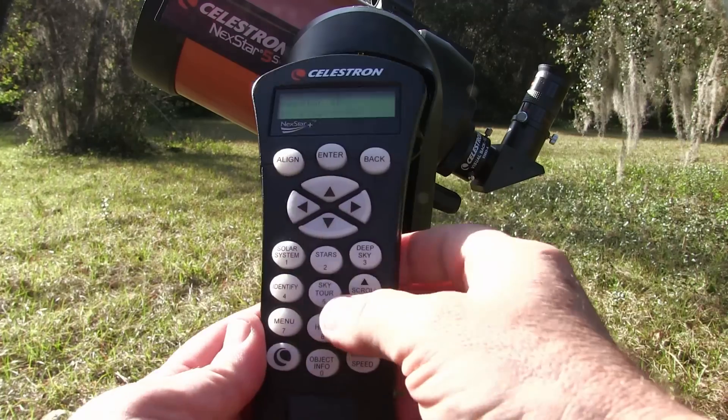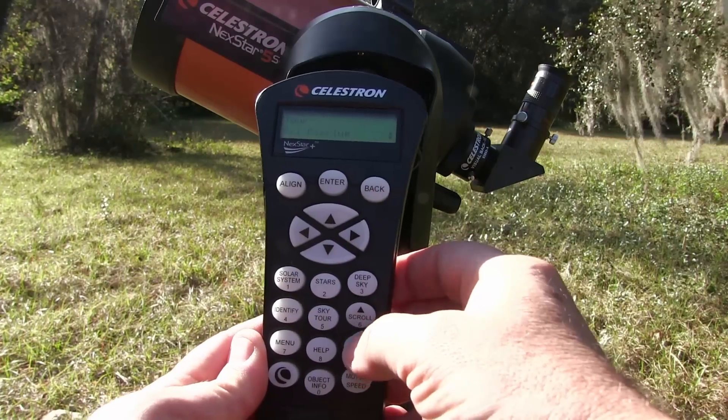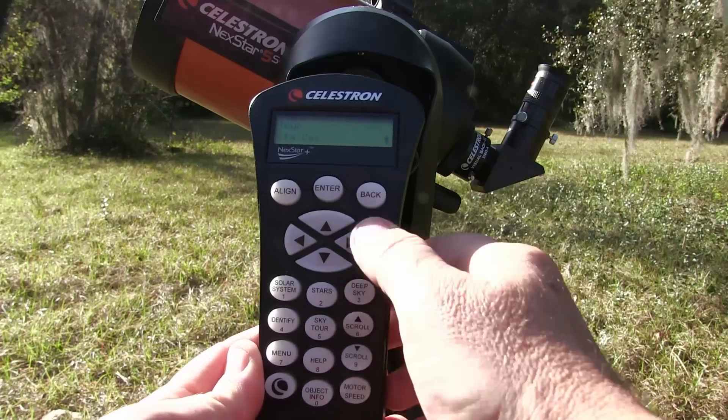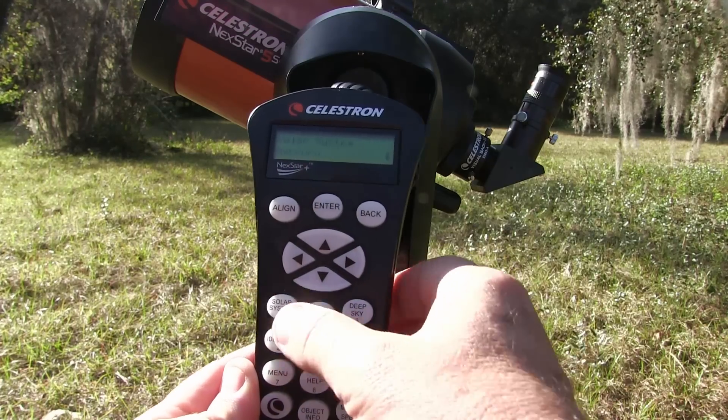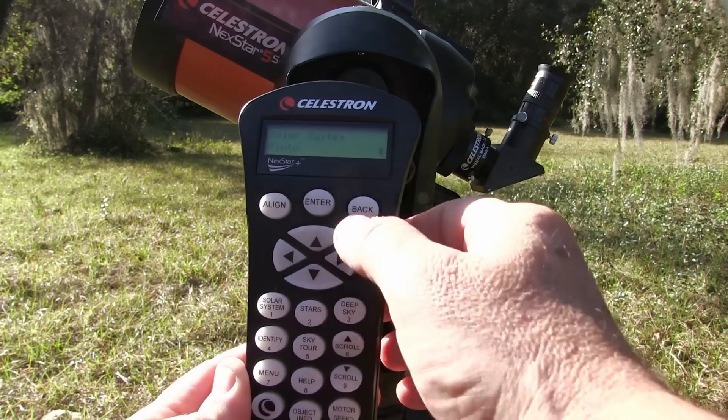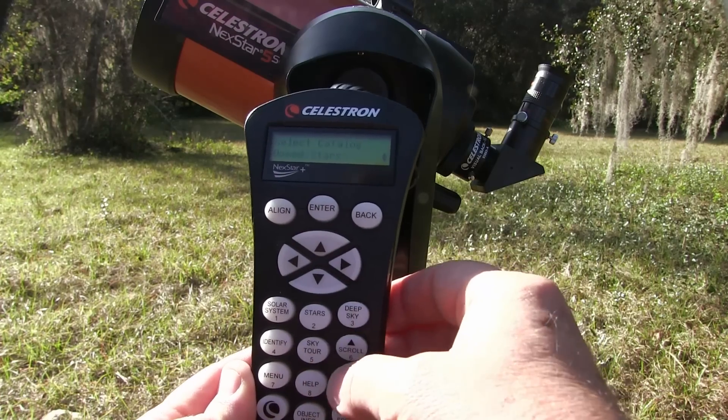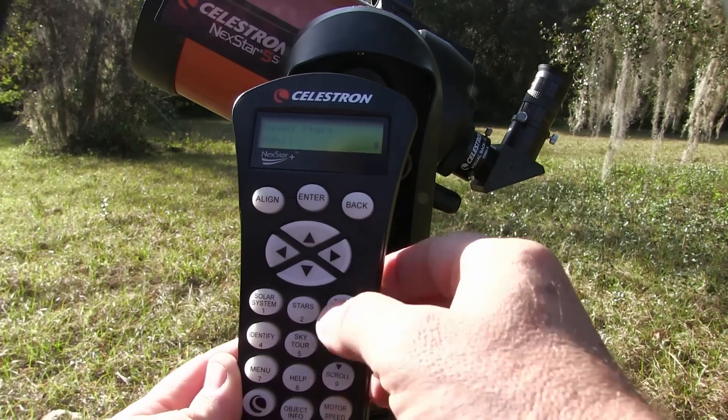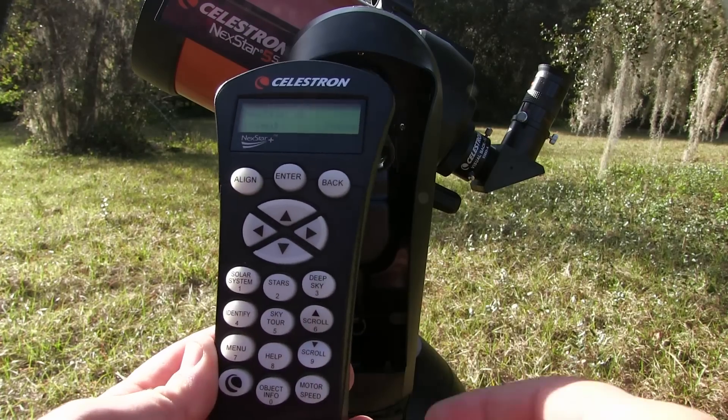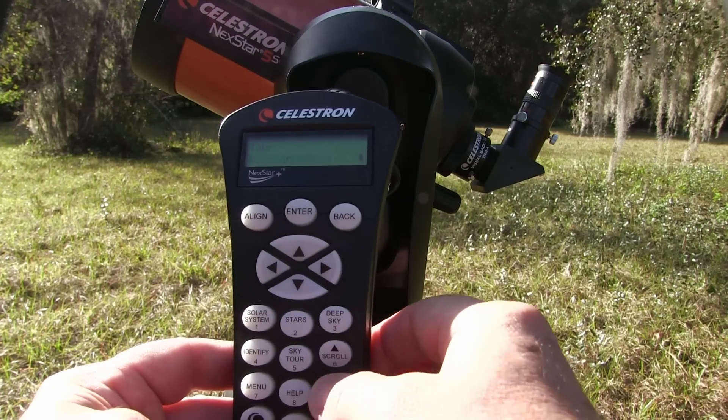And you do that by just selecting things on the keypad there's a star tour key for getting started showing all kinds of cool things to see at night, deep sky button shows you the nebulae, galaxies and star clusters in the catalog, solar system shows you the planets that are up that night, and the stars button will come as no shock to you will show you stars. Now once you find something you want to see in the keypad all you do is hit enter and boom boom the scope goes off to show you that wonder of the night sky.